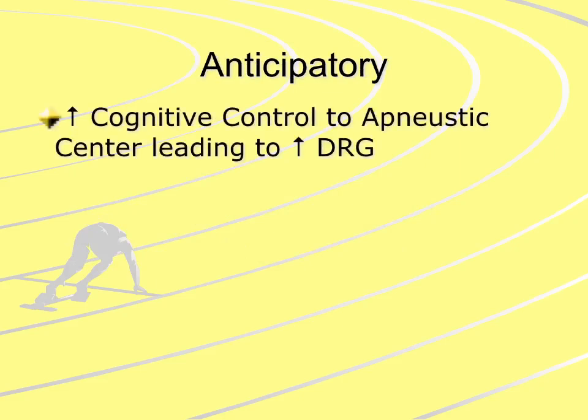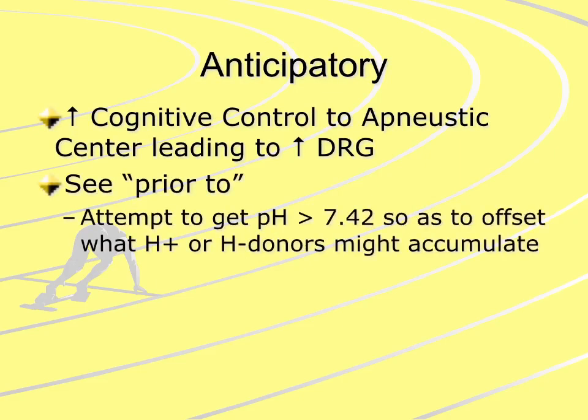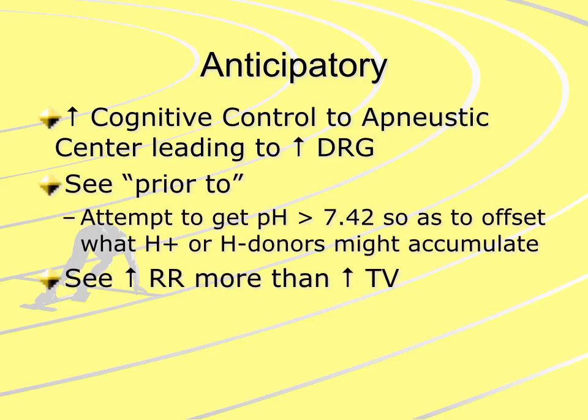The anticipatory set is an increase of cognitive control to the aponeustic center that leads to an increase of firing in the DRG. We see an increase in respiration rate more than an increase in tidal volume, and it usually occurs prior to any type of exertion. It's done in an attempt to increase plasma pH to offset any accumulation of hydrogen ions or hydrogen donors that will occur during activity or exertion.